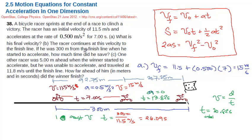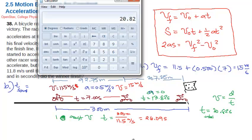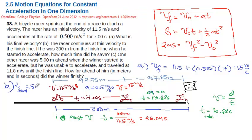The answer to Part B — time saved: the racer who didn't accelerate would take 26.09 seconds, while the racer who did accelerate took only 20.82 seconds. So the time saved is 26.09 − 20.82 = 5.27 seconds.